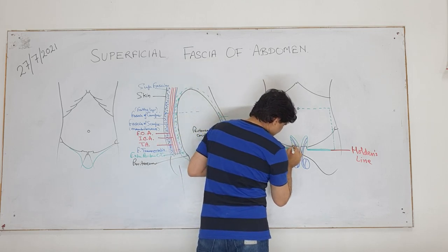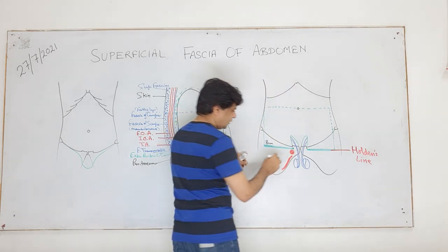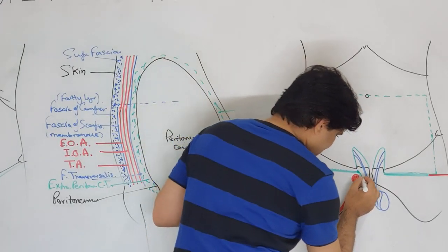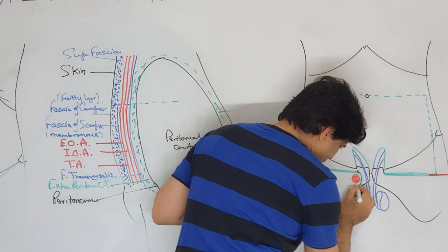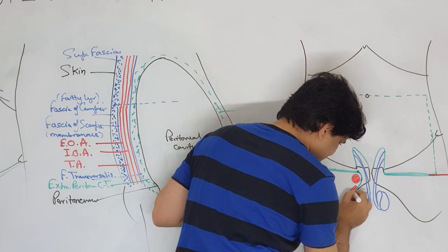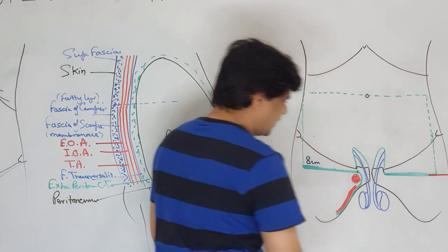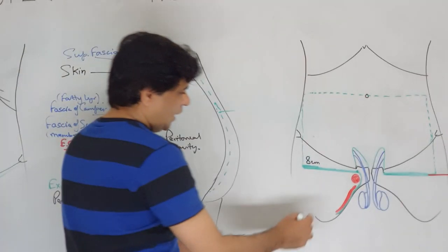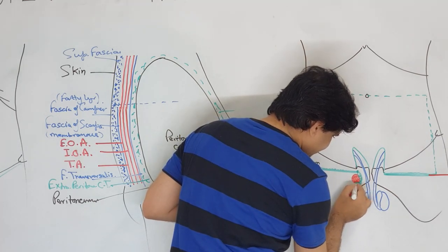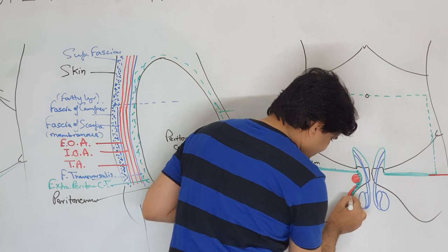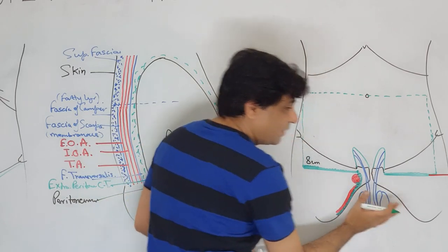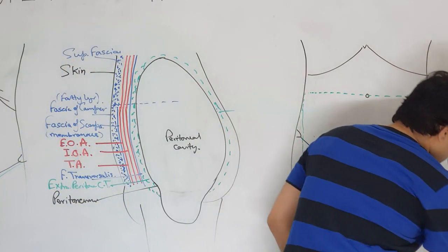The fascia is attached to the body of pubis and descends down along the ischiopubic ramus, fused and attached to the ischiopubic ramus. It also blends with the fascia covering the muscles adductor longus and gracilis, and here is the pelvic outlet.